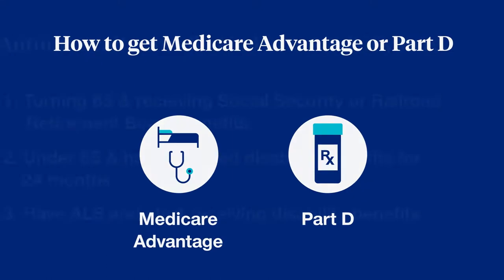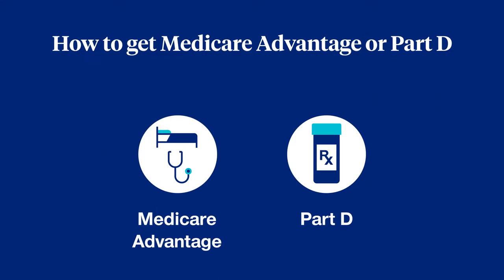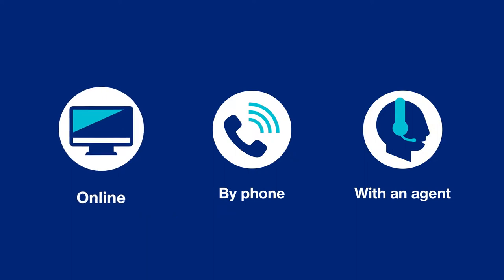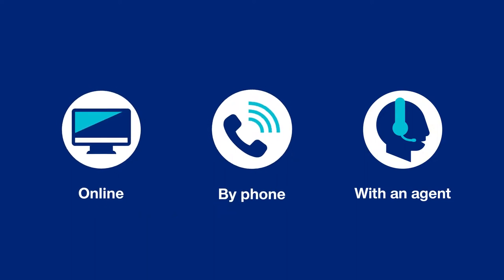If you want to get a Medicare Advantage or Part D prescription drug plan, you need to enroll directly with an approved Medicare plan provider. You can do so online, by phone, or with an agent.